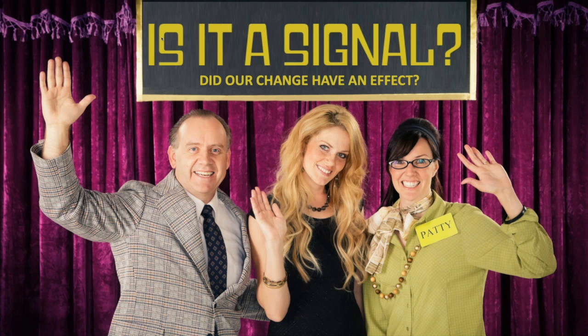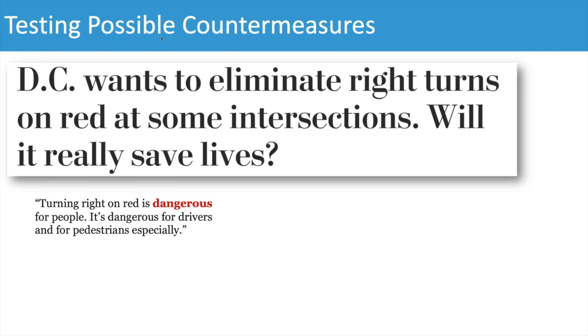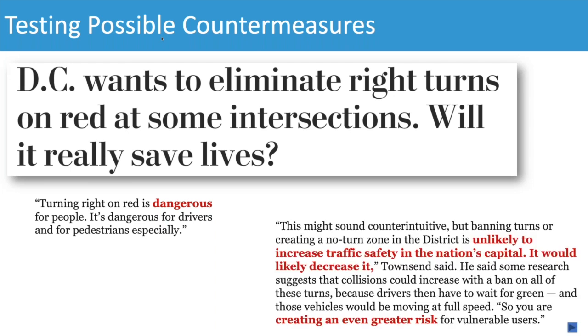Is it a signal? Did our change or proposed change have an effect? People are trying to improve the system to reduce pedestrian fatalities. In a workplace, we sometimes need to test different possible countermeasures. Here's an article: Washington D.C. wants to eliminate right turns on red — will it really save lives? As we find in the workplace, many countermeasures are controversial with experts on both sides. Some say turning right on red is dangerous for pedestrians; others say banning it are unlikely to increase safety and might actually increase risk. This comes back to an important workplace question around cause and effect relationships — making a change and evaluating to see if we made a difference on the system.